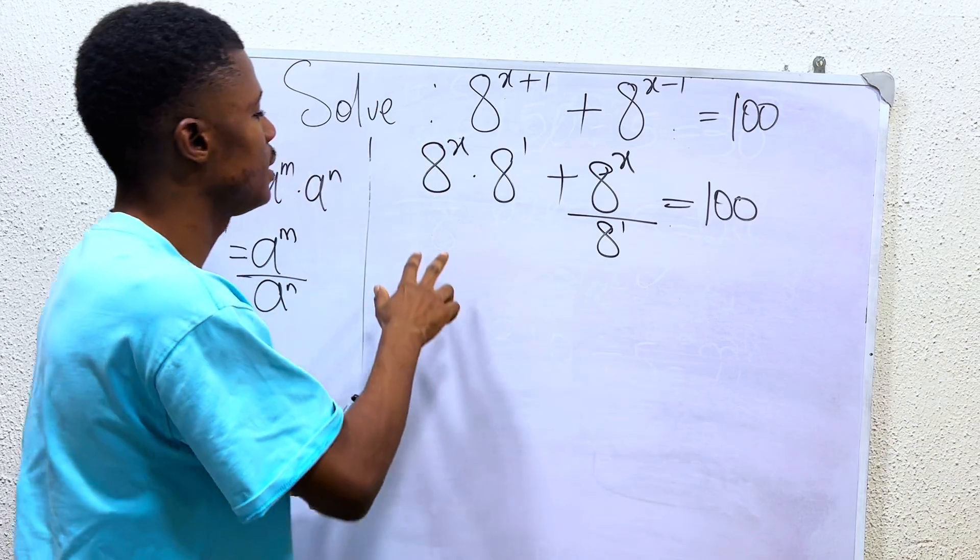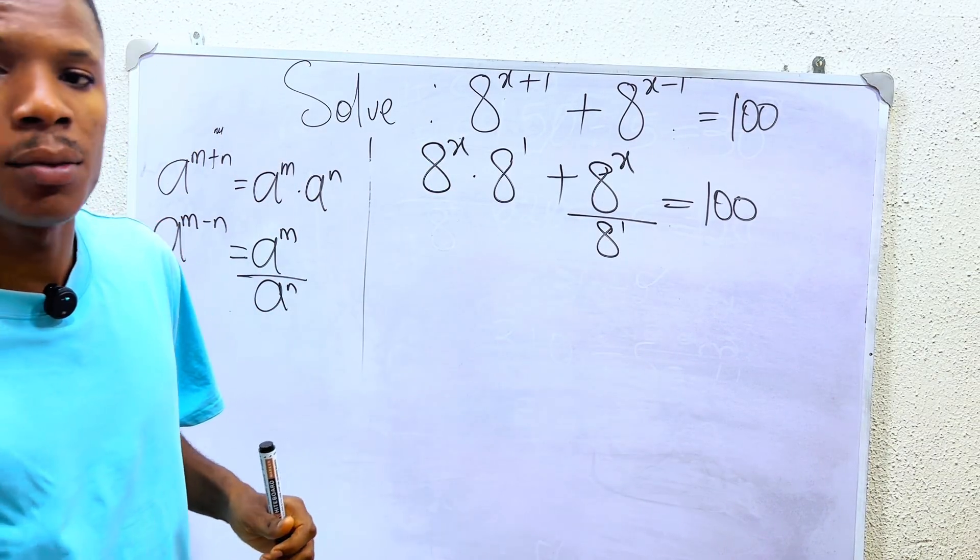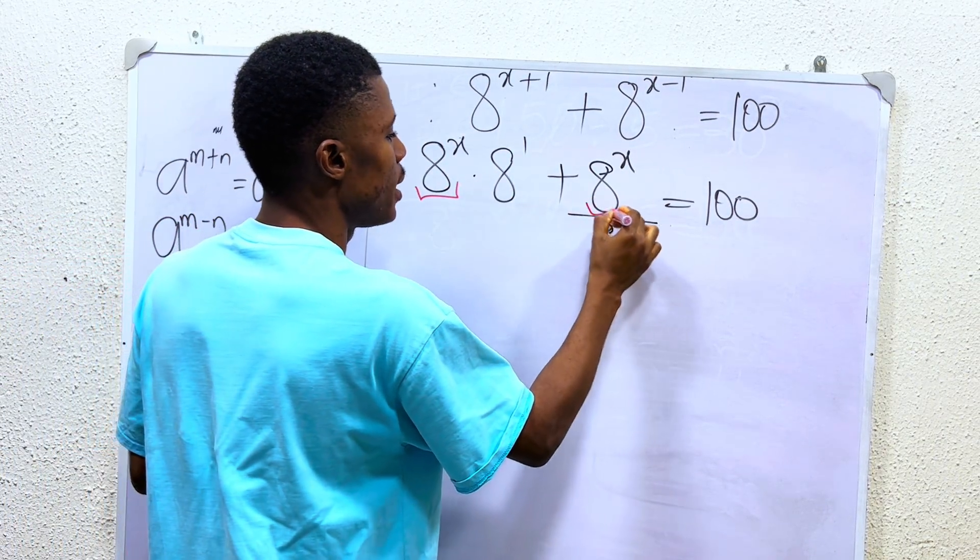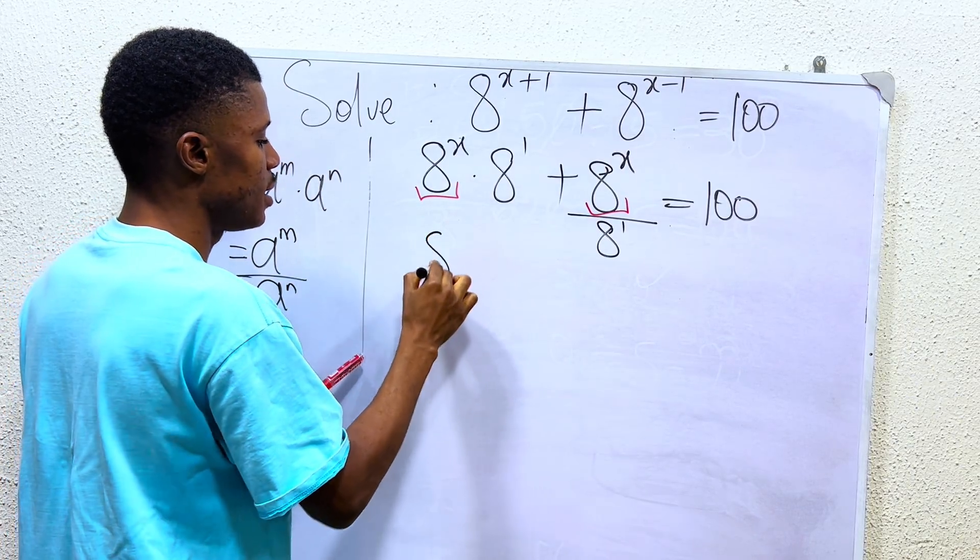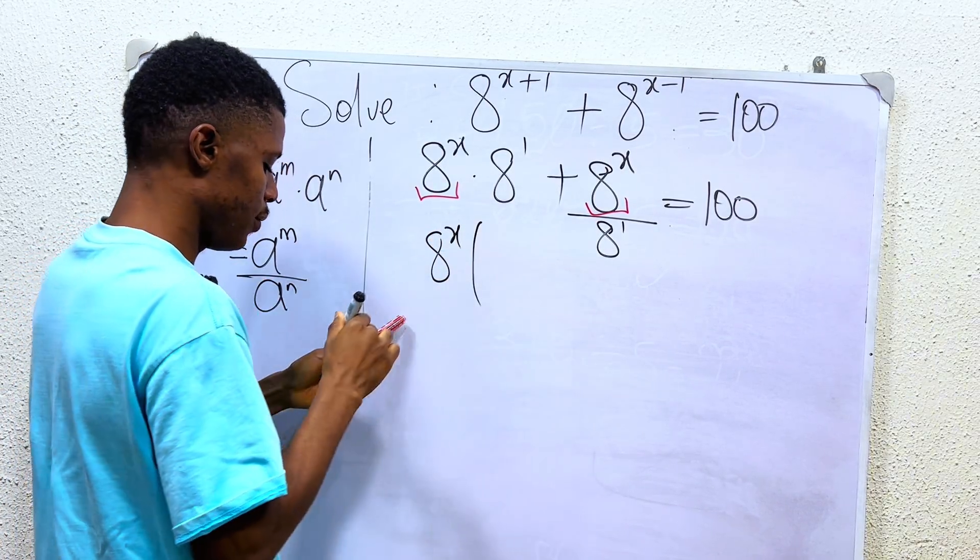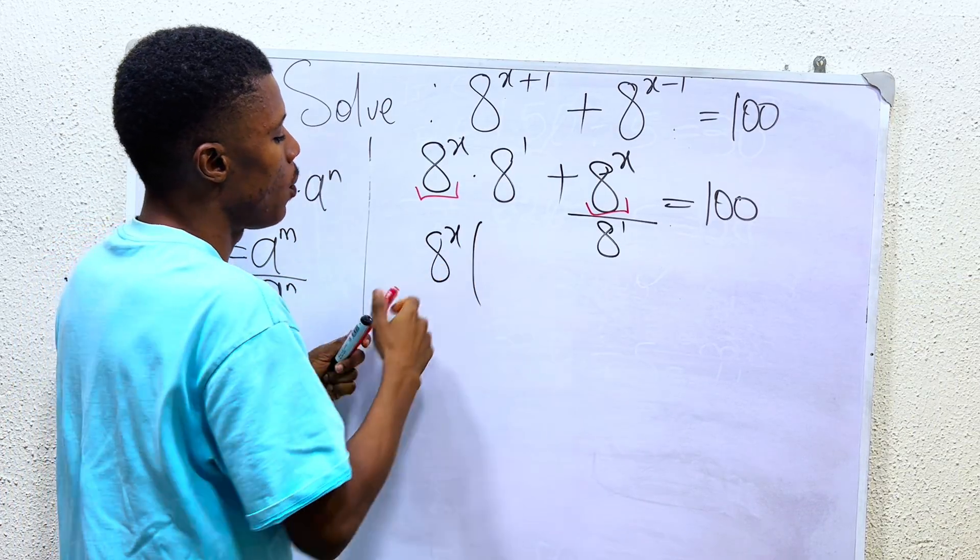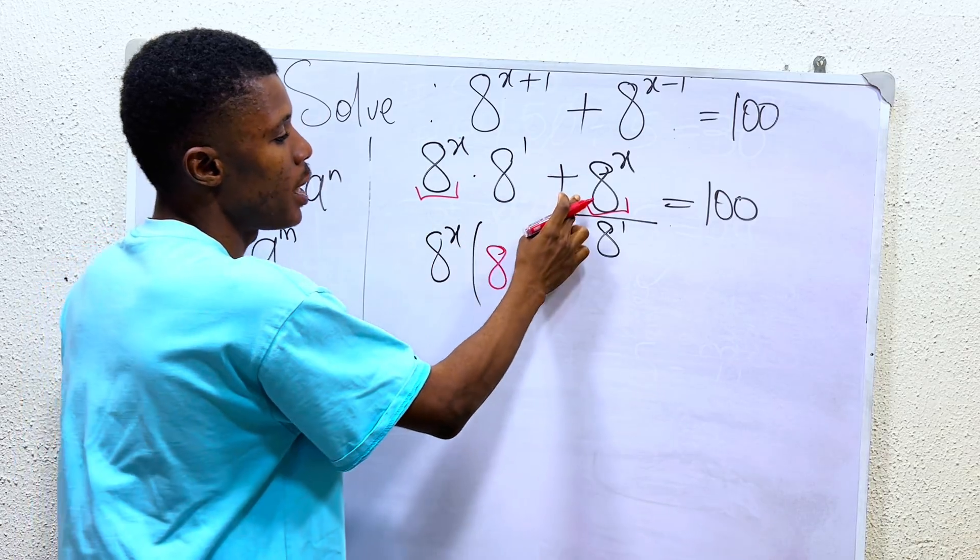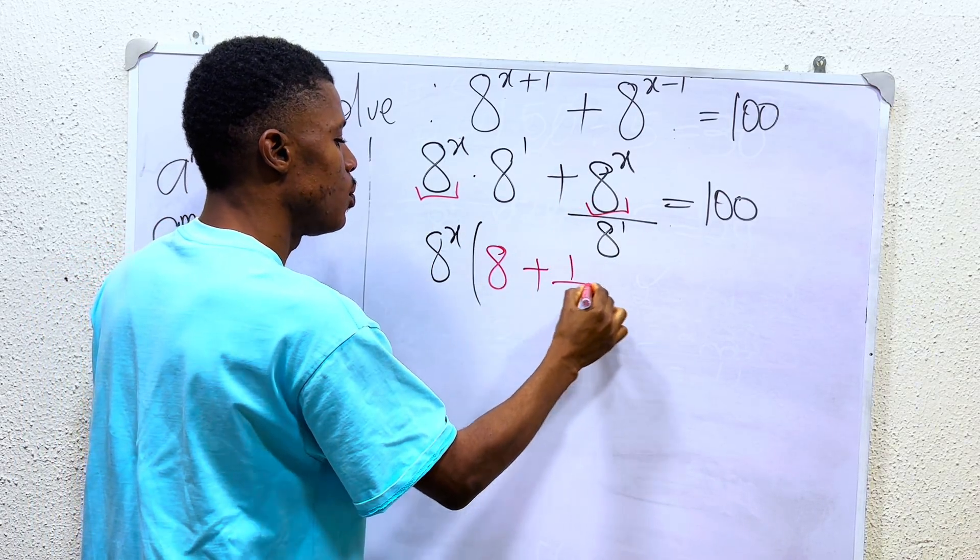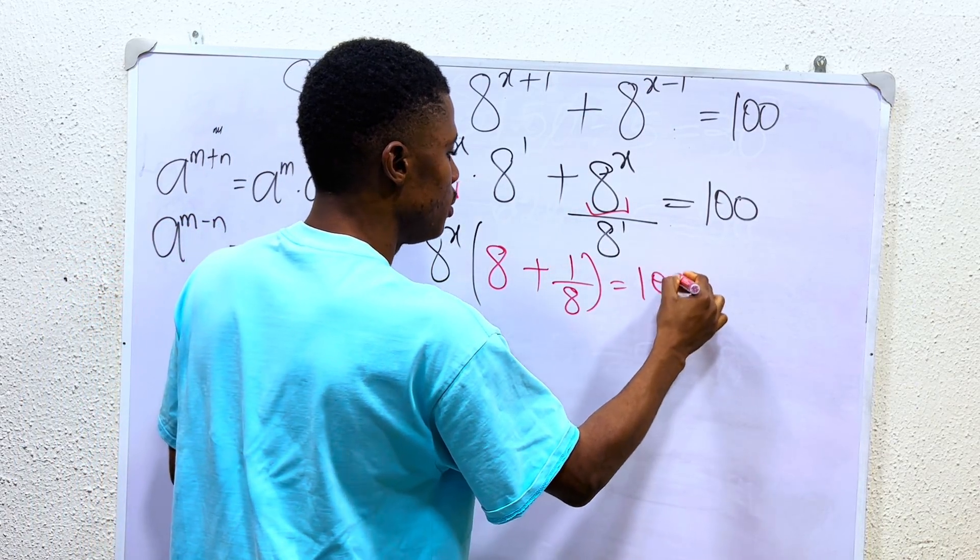You understand that 8 power of x is actually common here, so I can factor out 8 power of x. If I factor out 8 power of x, what will I have? I have it as 8 power of x times, for the first one I'm left with 8 power of 1, which is 8, plus, if I factor out 8 power of x here, I'm having this as 1 over 8, and that equals 100.